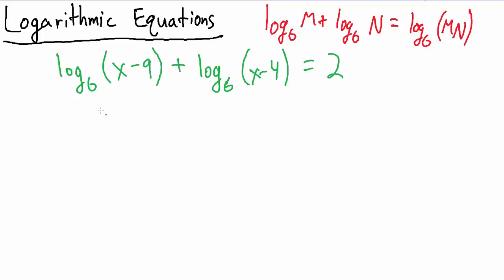So then on the left-hand side if we squish these guys together what we're going to get is base 6 log of x minus 9 times x minus 4 and then still just equals 2.